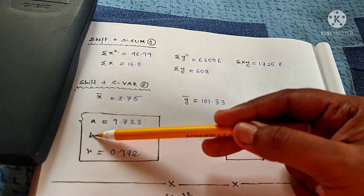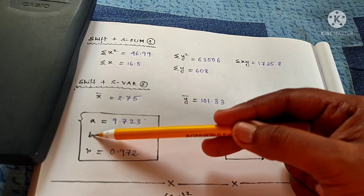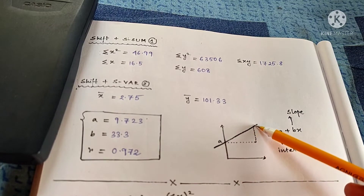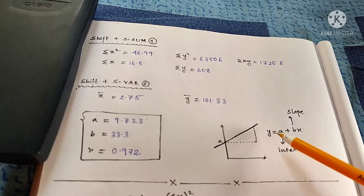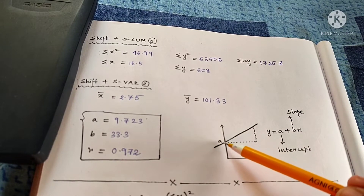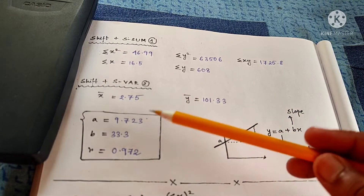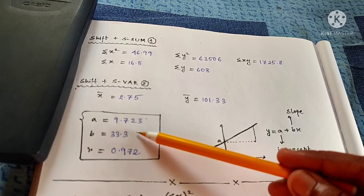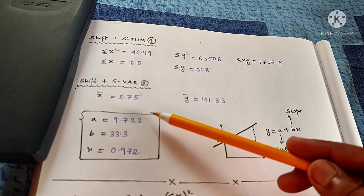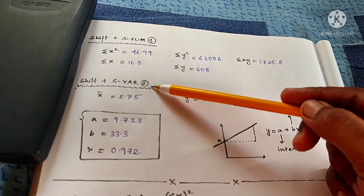What are A, B, and R? A is the intercept and B is the slope of the linear regression straight line. So if this is the linear regression line, whose formula is Y equal to A plus BX, then A is the intercept where this line cuts the Y axis and B is the slope of this line. R is the Pearson's product moment coefficient of correlation. I have shown how to find out all three values using the function Shift plus S-Var or 2.